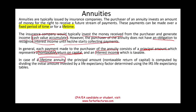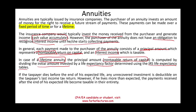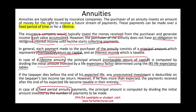For a lifetime annuity, the non-taxable principal amount is computed by dividing the initial amount invested by a life expectancy factor from the IRS life expectancy table. If the taxpayer dies before the end of their expected life, any unrecovered investment is deductible on the taxpayer's final income tax return. However, if the taxpayer lives longer than expected and receives more than their total investment, all payments received after that point become taxable in their entirety.